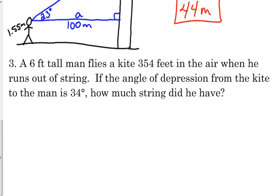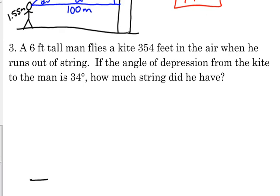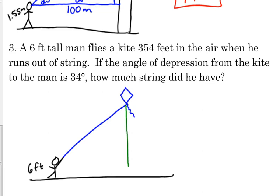Okay, similar scenario here with number three. A six-foot-tall man flies a kite 354 feet in the air when he runs out of string. The angle of depression from the kite to the man is 34 degrees. How much string did he have? So, similar scenario. We've got the ground, we've got a six-foot-tall man. He's flying a kite. We're going to assume that he's holding it at the top of his head just to simplify things. A kite string is about as artistic as I'm going to get. The kite is flying 354 feet in the air. That's referring to its vertical height.